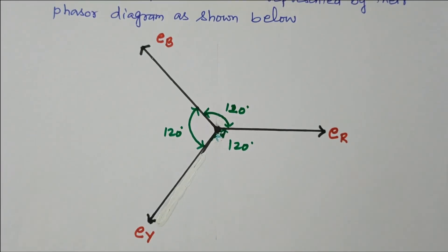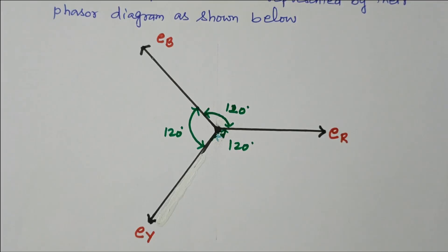In this video we discussed how three-phase EMF is generated. The coils are placed with a displacement of 120 degrees between each coil. According to Faraday's law, EMF is induced and that EMF is also displaced by 120 degrees. We verified this with the waveform, followed by the equations, followed by the phasor diagram. Subscribe the channel for more videos and notifications. Soft copy of this material is available in the drive; the link is given in the description box. Thank you for listening.